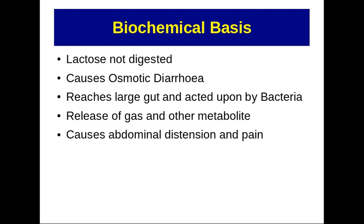When this lactose then reaches the colon, we know that the gut has commensal bacteria, and these bacteria act upon the lactose — they metabolize it, releasing a lot of gases and acids. These gases and acids are responsible for the abdominal distension and flatulence. So in summary: diarrhea is due to osmotic diarrhea, and abdominal distension and flatulence are due to gases released by the commensal bacteria in the colon acting on the undigested lactose.